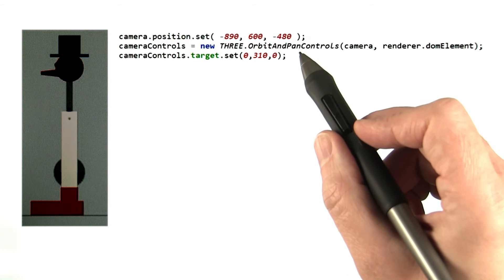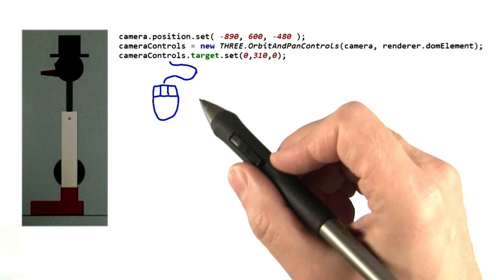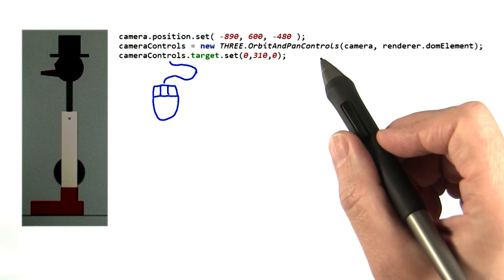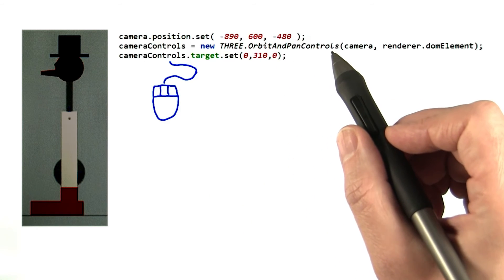The camera controls code does two things. First, it sets up what sort of mouse controller you want for the camera, if any. I came up with this custom orbit and pan controls class, extending the orbit controls class I found in Three.js.